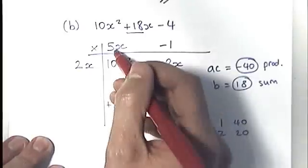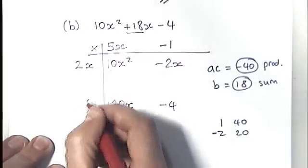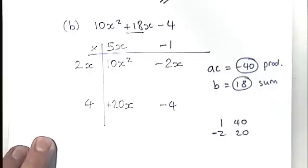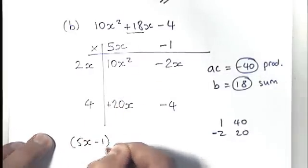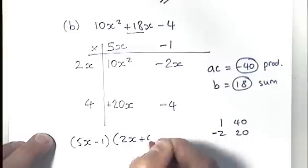So now I'm looking at my brackets, and I have got 5x minus 1, and 2x plus 4. And it's really quite straightforward.